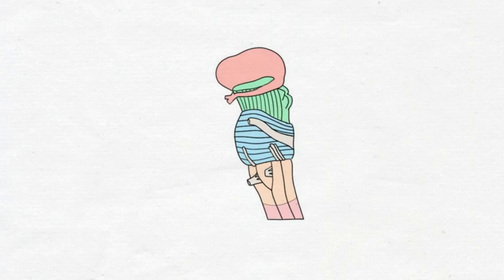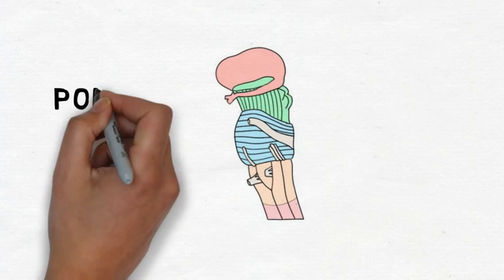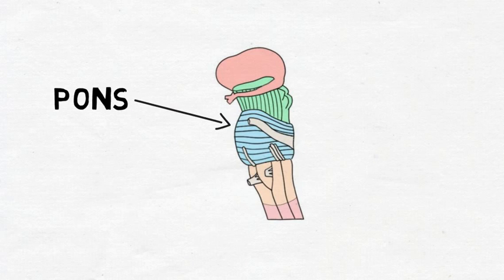The next structure on our way up the brainstem is the pons. The word pons means bridge in Latin, and the pons is a large, rounded structure resembling a rounded bridge that connects the medulla and the midbrain.